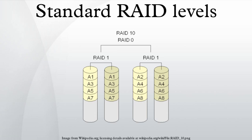RAID 4 uses block-level striping with a dedicated parity disk. In the example, a read request for block A1 would be serviced by disk 0. A simultaneous read request for block B1 would have to wait, but a read request for B2 could be serviced concurrently by disk 1. RAID 4 is very uncommon, but one enterprise-level company that has previously used it is NetApp. The aforementioned performance problems were solved with their proprietary WriteAnywhere file layout, an approach to writing data to disk locations that minimizes the conventional parity RAID write penalty. By storing system metadata in the same way application data is stored, WAFL is able to write file system metadata blocks anywhere on the disk. This approach allows multiple writes to be gathered and scheduled at the same RAID stripe, eliminating the traditional read-modify-write penalty prevalent in parity-based RAID schemes.